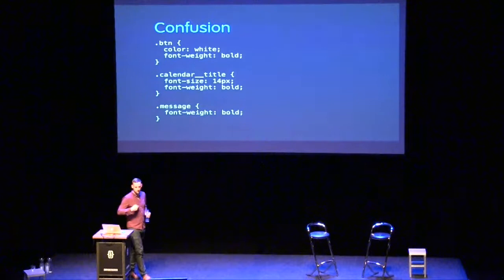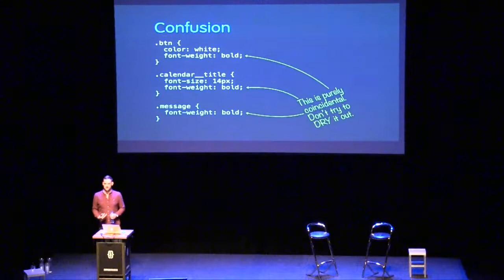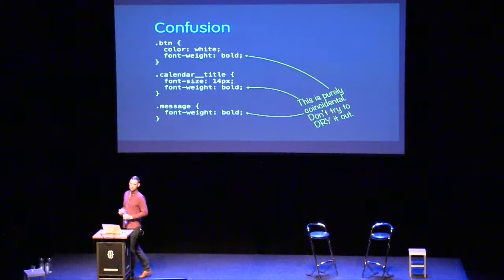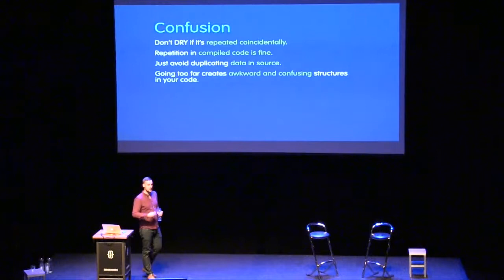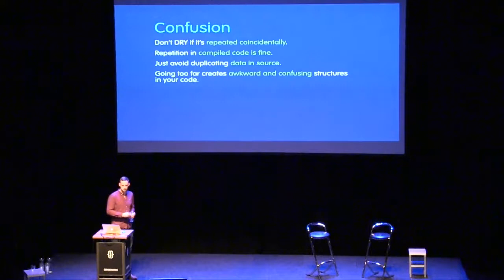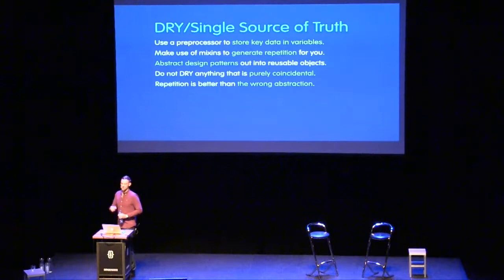Generating repetition is completely fine. Another example: `font-weight: bold` appearing three times entirely coincidentally. To DRY this out would be to force odd, unusual relationships in your codebase — unnecessary abstraction around something that never needed it. If it's repeated coincidentally, don't bother DRY-ing it out. Strings can appear as many times as they need to. Going too far just creates awkward, confusing relationships — over-abstraction and obscurity.